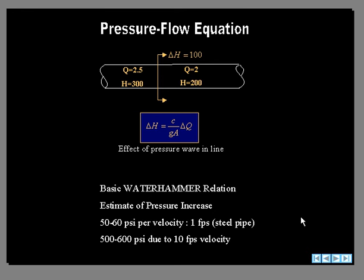And down here, this gives you an idea of what sort of pressure change accompanies a flow change. In a steel pipe, a one foot per second change in velocity will produce a 50 to 60 psi wave. So that's quite a large wave, and that's what is so significant.